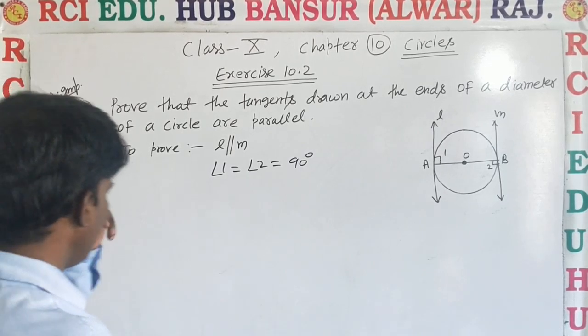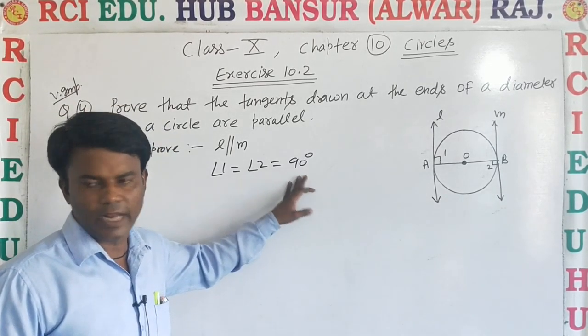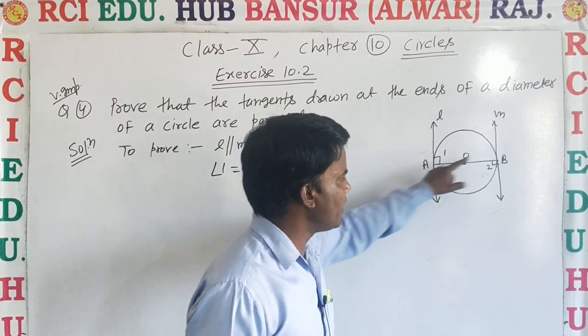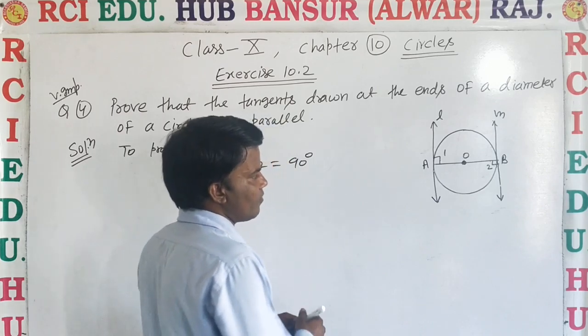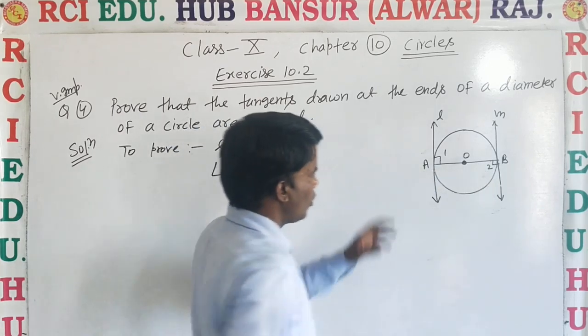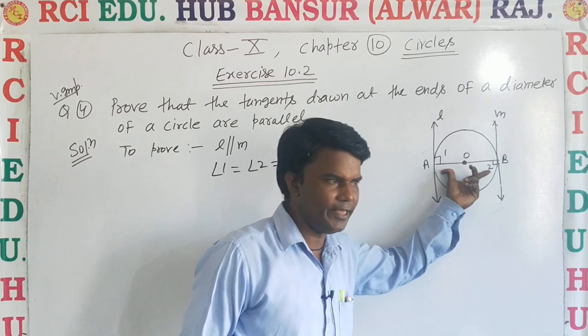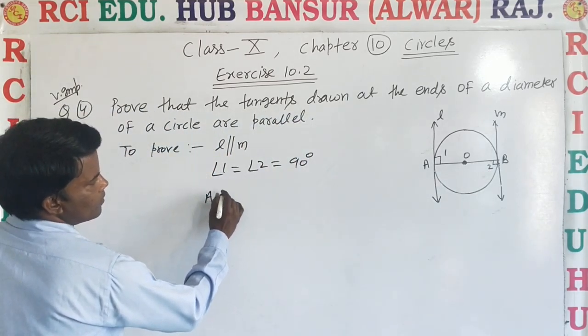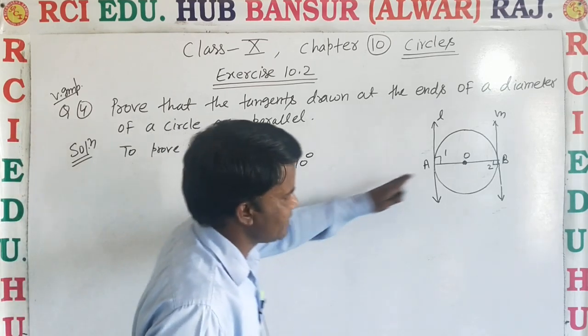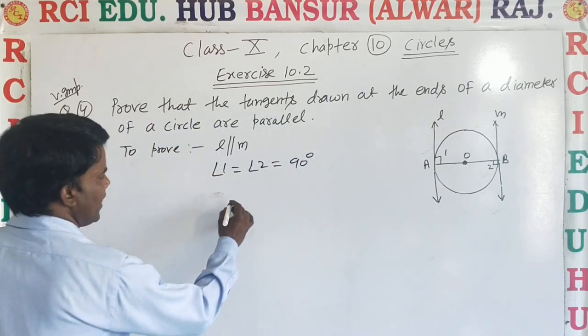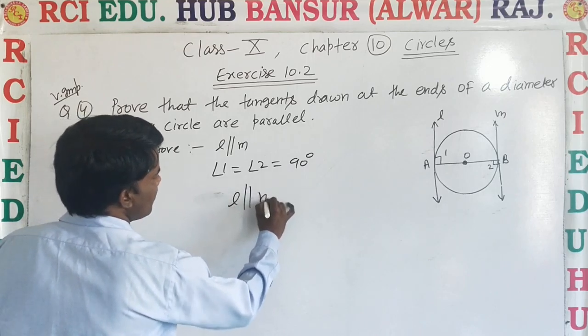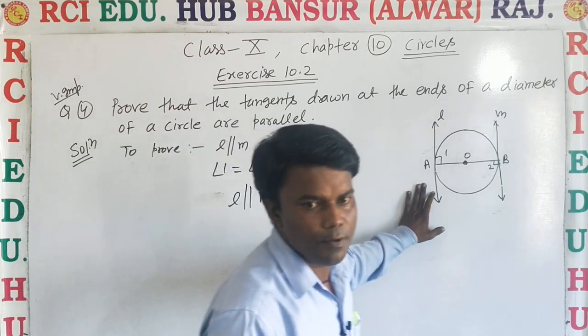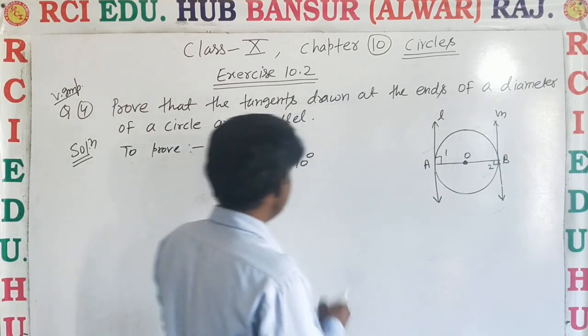So that angle 1 and angle 2 is equal to 90 degrees. But this angle is alternate angle, Z-shape me ban rahe. So that line L parallel line M. To yeh keh sakte ki line L, line M ke parallel hogi. Hence proved.